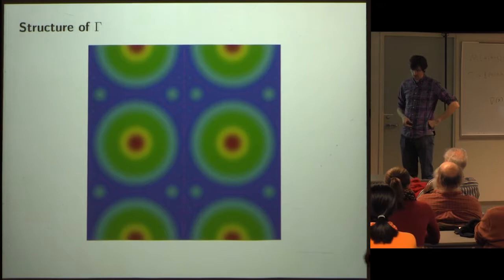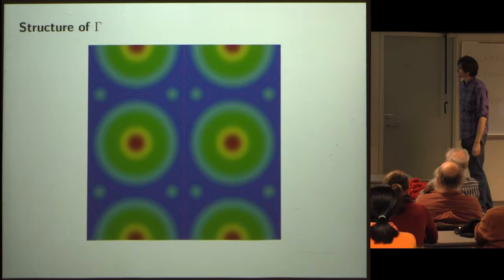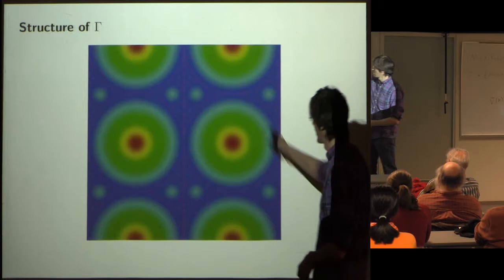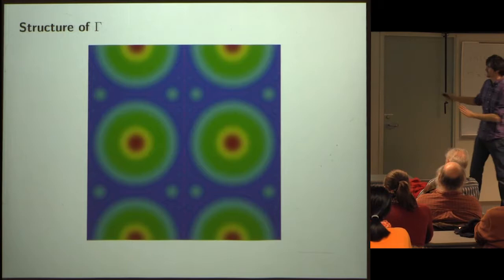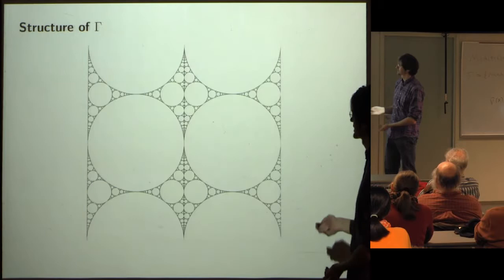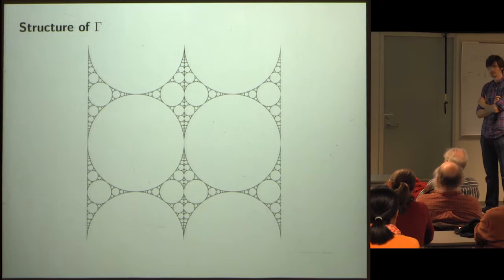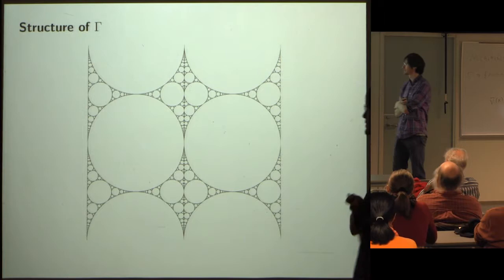If you isolate the level set where all of the cones meet, you see a classical fractal. It's an Apollonian circle packing.